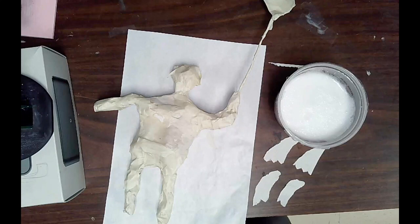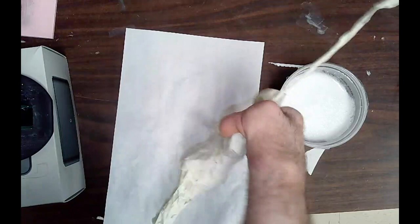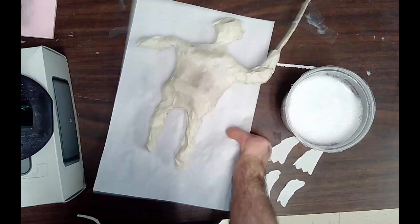Once you're done with one side, if it's still wet you can flip it over and you can work on the other side and it'll stay on the wax paper and won't stick.